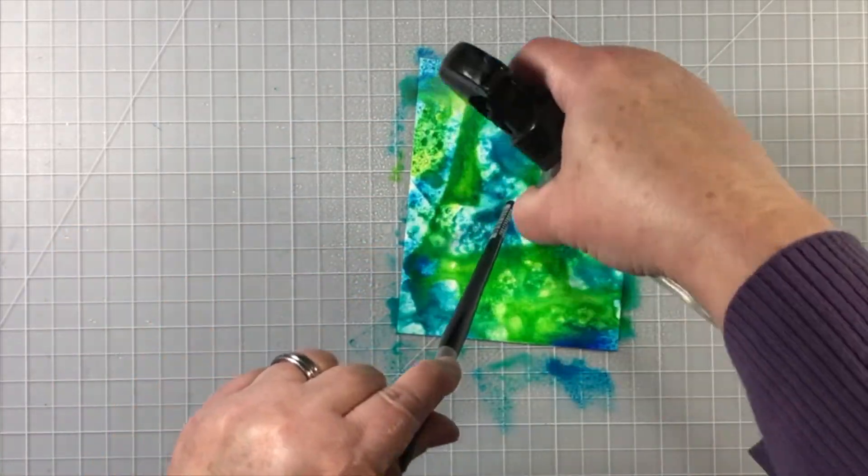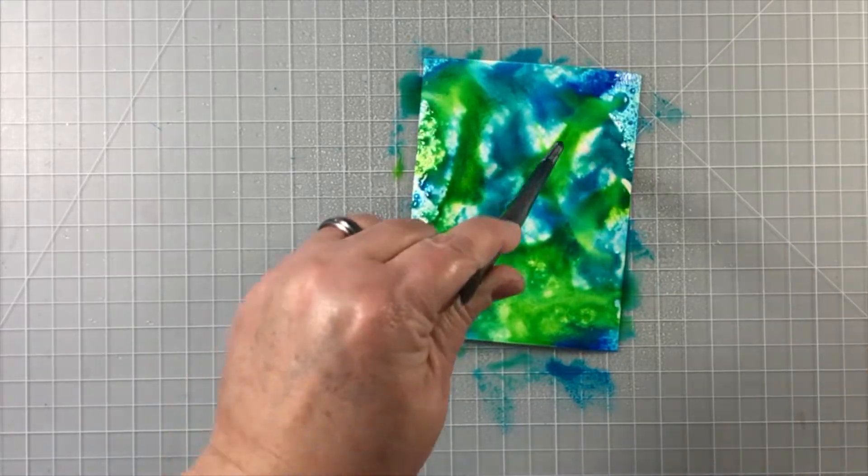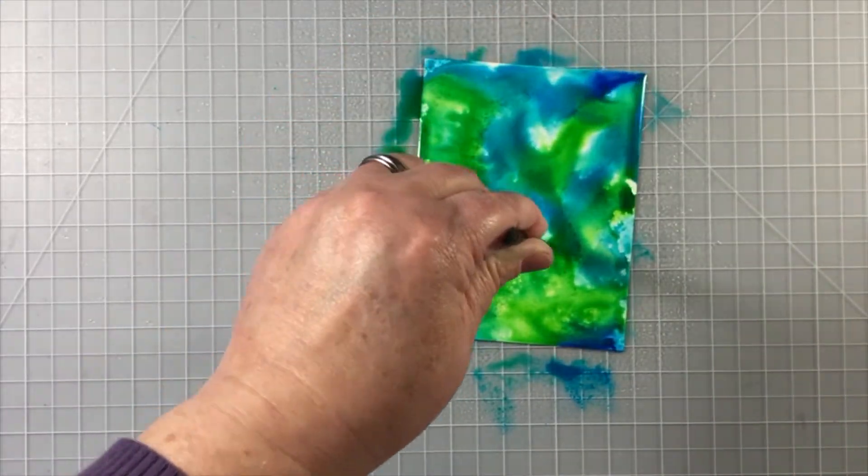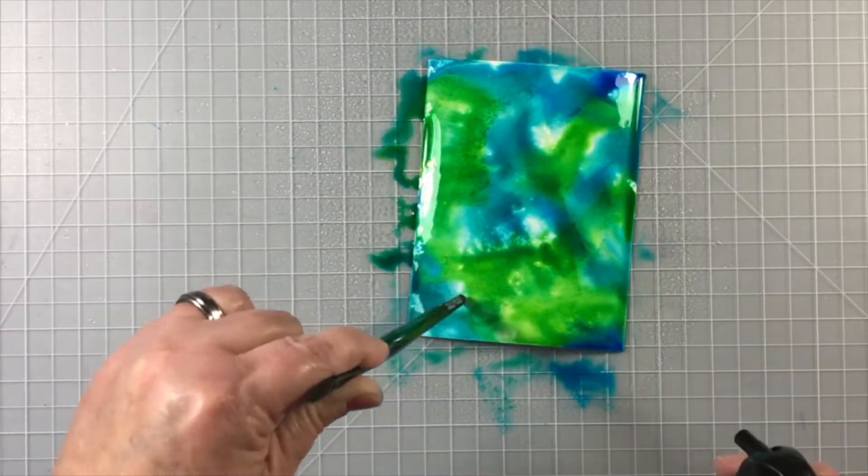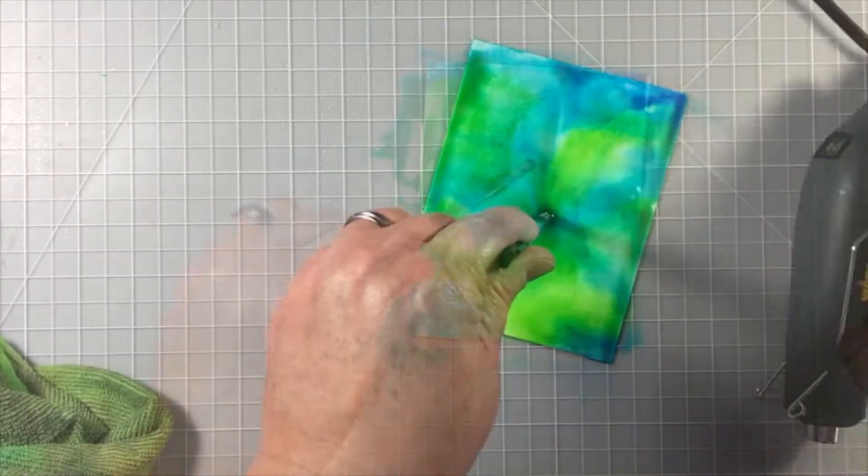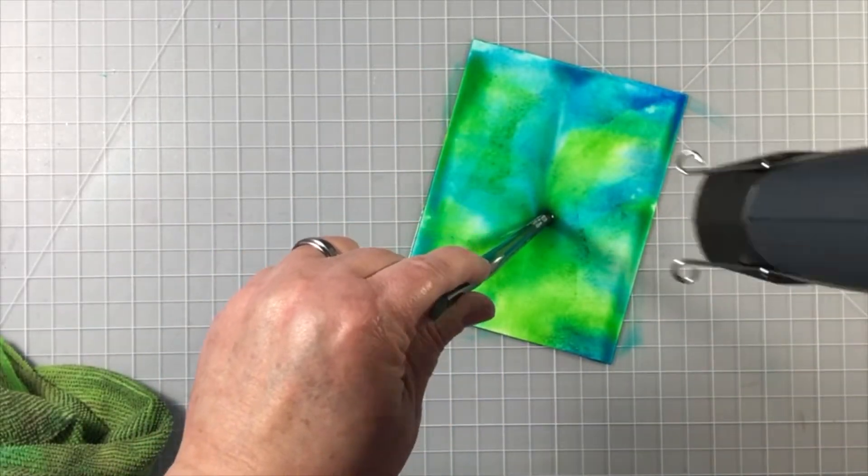Now using the blunt end of a paintbrush or any kind of tool you like to hold your paper down, allow it to mix around with some water and spray it as much as you like.